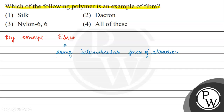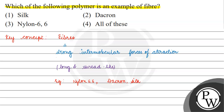These polymers are used to make fibers because they are long and thread-like. Examples we have are nylon 6,6, dacron, and silk. Among these, silk is a natural fiber while the other two — nylon 6,6 and dacron — are synthetic fibers.